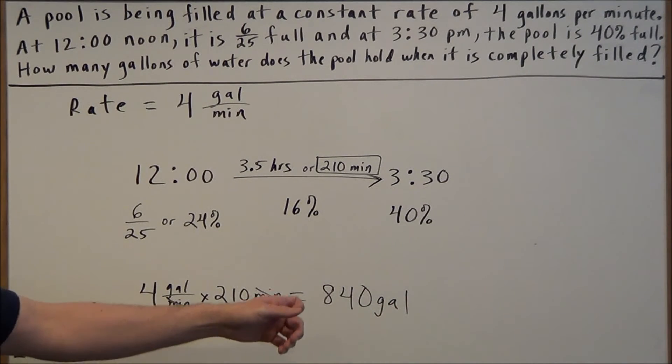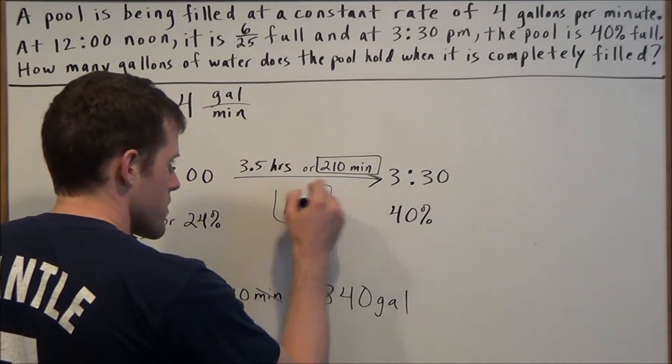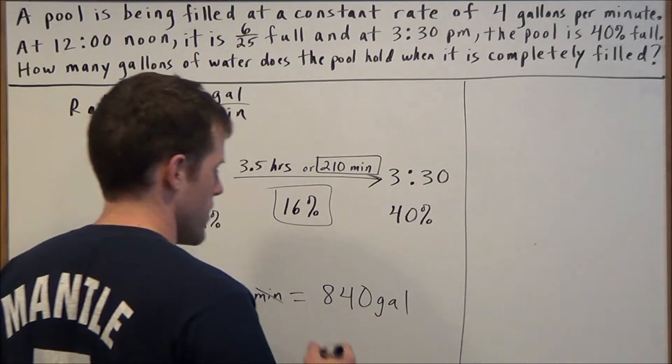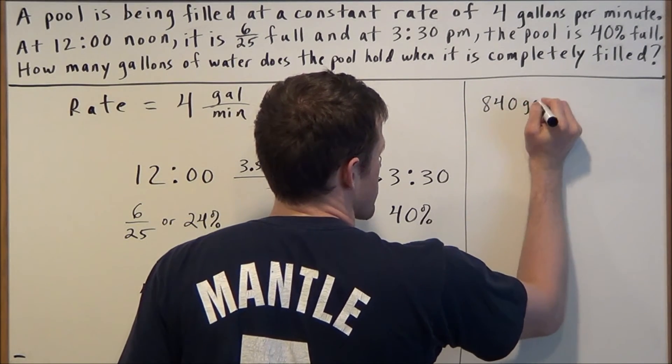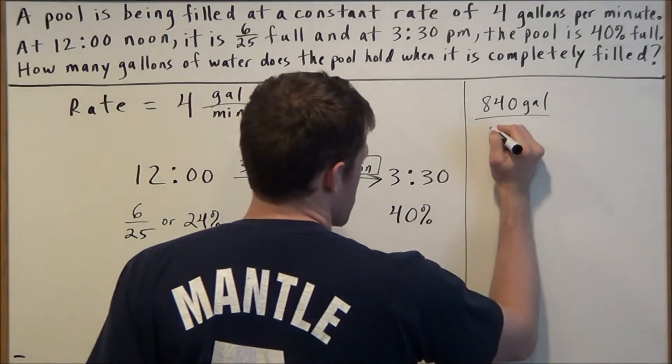Now we have to be careful—we cannot call this our answer because this just represents 16% of the pool. So now we can set up a proportion that 840 gallons corresponds directly to 16% of the pool's volume.